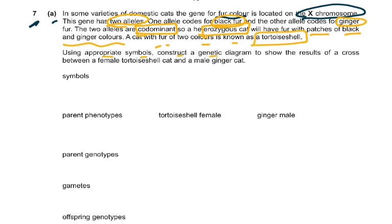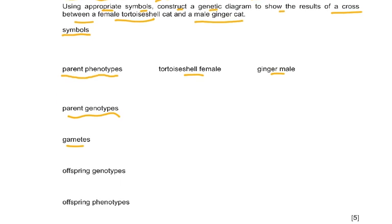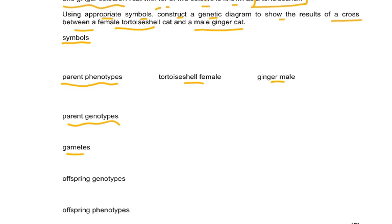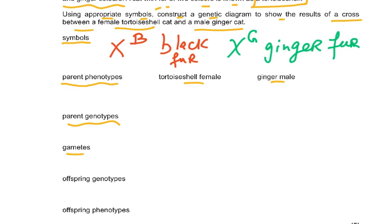Using appropriate symbols, construct a genetic diagram to show the results of a cross between a female tortoiseshell cat and a male ginger cat. Since the fur color gene is on the X chromosome, this is a sex-linked genetics question. You have to show parental phenotype, parent genotype, gametes, offspring genotype, and offspring phenotype — all for five marks. For co-dominant alleles, use capital letters: X^B for black fur and X^G for ginger fur.